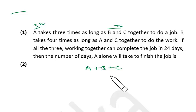This means in one day, how much work do they do? 1 by 24. This equation will be for one day. Now B and C together do the work in x days. So in one day they will do 1 by x work.